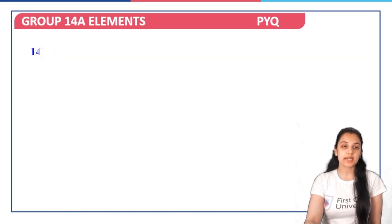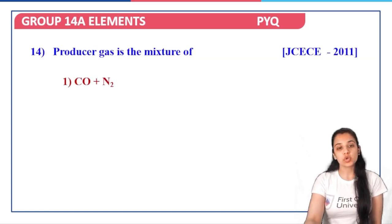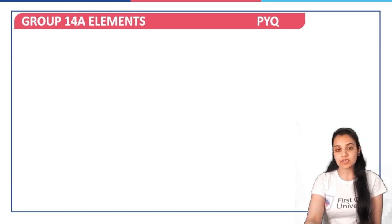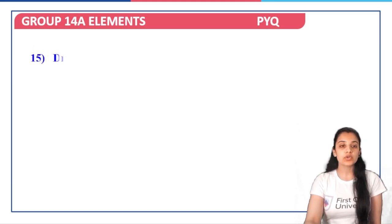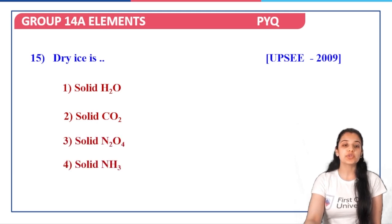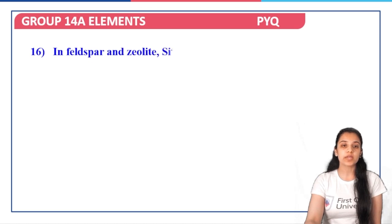Next: producer gas is a mixture of CO + N2, so option one is the correct answer. Moving on: dry ice is solid CO2, so option two is the correct answer. These are simple questions and we need not go into detail.